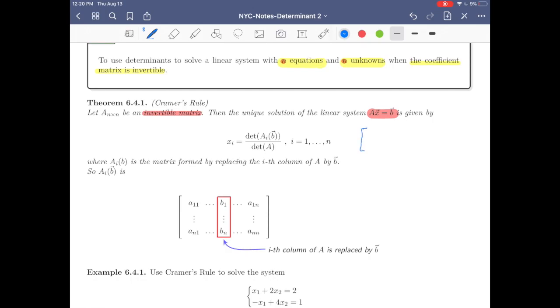Let me write the general form of the linear system with n equations and n unknowns. So Ax equals b1 through bn.